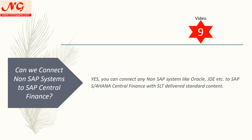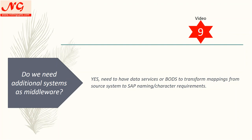Question two: do we need additional systems as middleware? For ECC, you just need the source ECC, SLT for transformation, and S/4HANA as the target. However, when you have a non-SAP system — for example Oracle — you need an additional system such as Data Services or Business Objects to perform the data mapping and transformation.